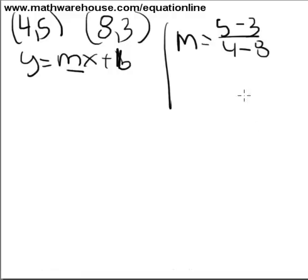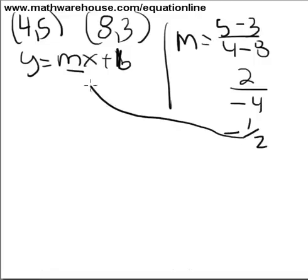5 minus 3 is 2, 4 minus 8, negative 4, this simplifies to be negative 1 half. Substitute that in for m, and you have y equals negative 1 half x plus b.